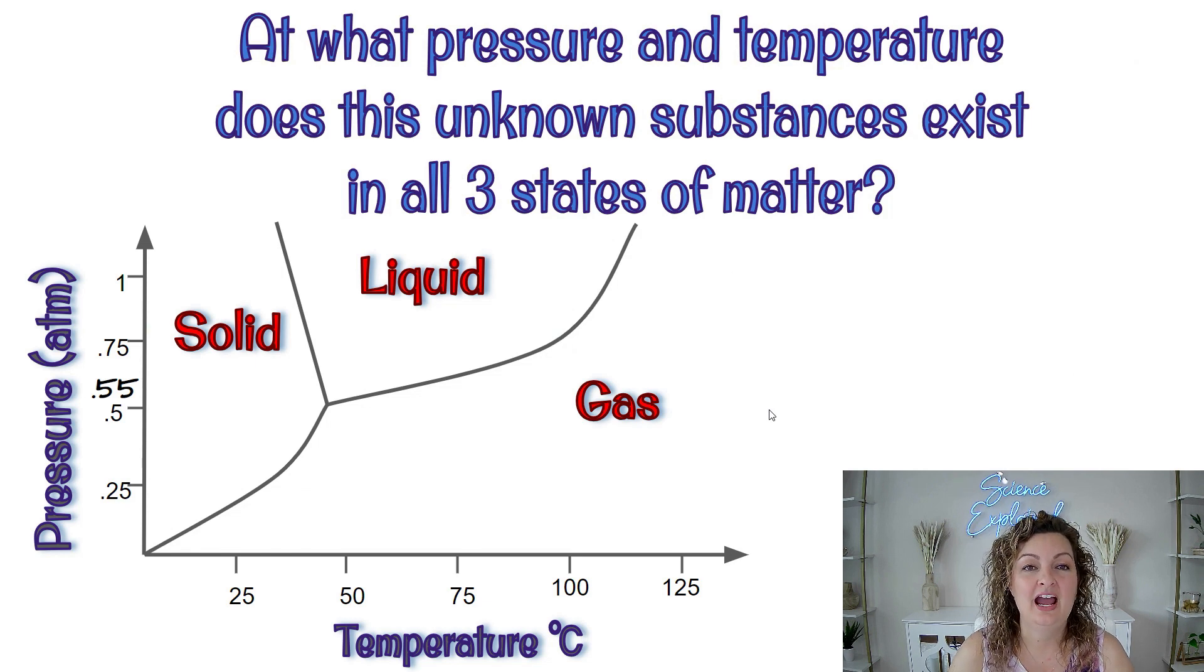Let's try one more. At what pressure and temperature does this unknown substance exist in all three states of matter? In other words, what this is asking us is what is the triple point. So our triple point is where all three exist, which is going to be right here where all three lines intersect or come together.